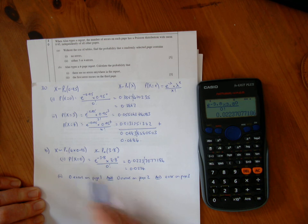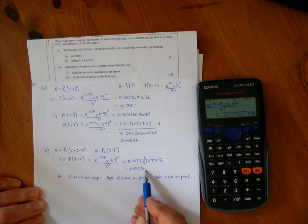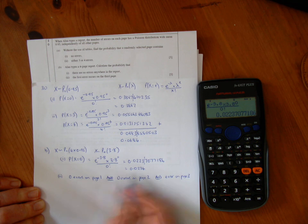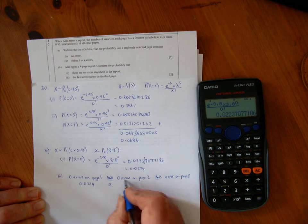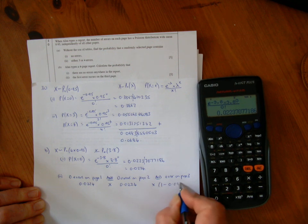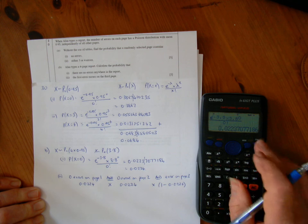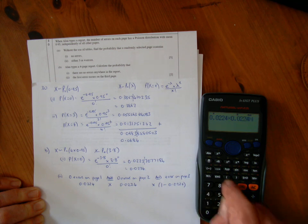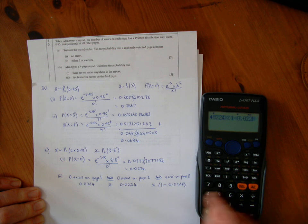The probability of no errors on a page is 0.0224. So the probability that there will be an error on the page is 1 minus 0.0224. So no errors on page 1 is 0.0224, no errors on page 2 is 0.0224, and an error on page 3 is 1 minus 0.0224. Multiplying those out: 0.0224 times 0.0224 times 1 minus 0.0224.